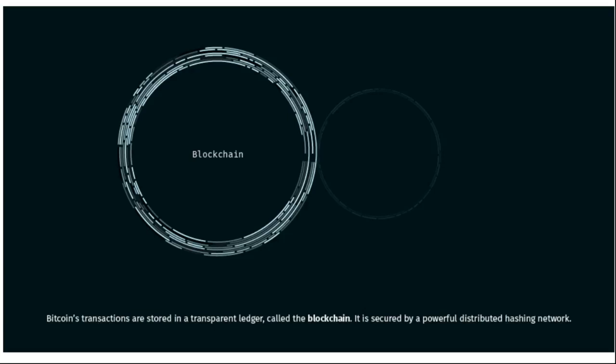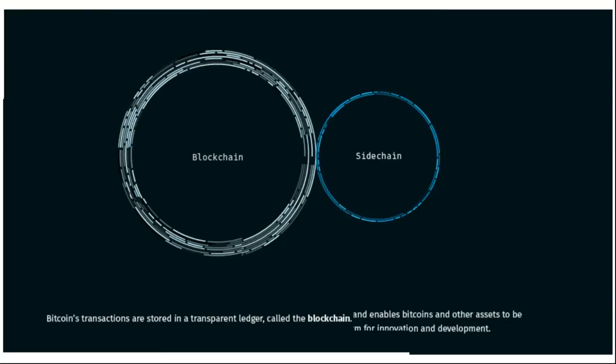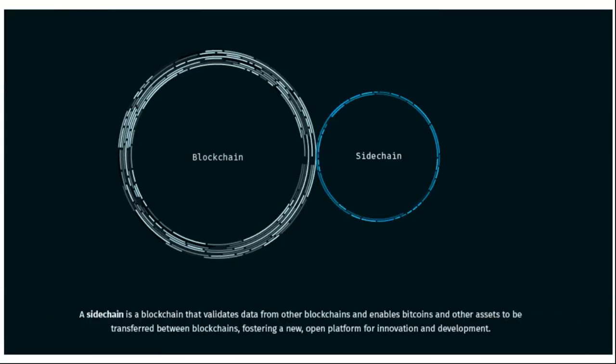Bitcoin's transactions are stored in a transparent ledger called the blockchain, secured by a powerful distributed hashing network. A side chain is a blockchain that validates data from other blockchains and enables bitcoins and other assets to be transferred between blockchains, fostering a new open platform for innovation and development.